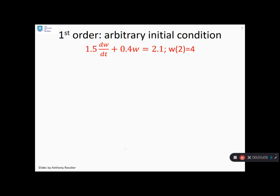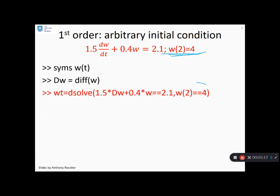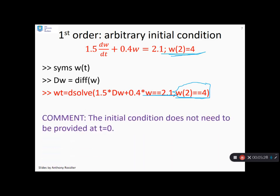What about the initial condition? Now, I was putting in w at time 0 but you'll see you don't have to. Sometimes you get the initial condition at a different time. So here I'm giving it at time 2 just for illustration. How will MATLAB deal with this? And you'll notice, no problem, I just put my initial condition in as it's provided here at time 2. And otherwise the syntax is exactly the same. So the key comment here is the initial condition does not need to be provided at time t equals 0.